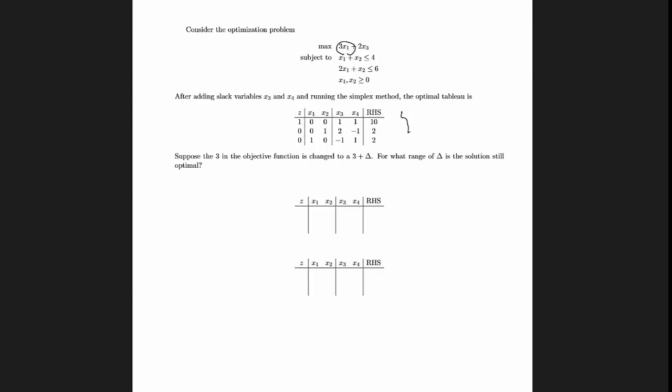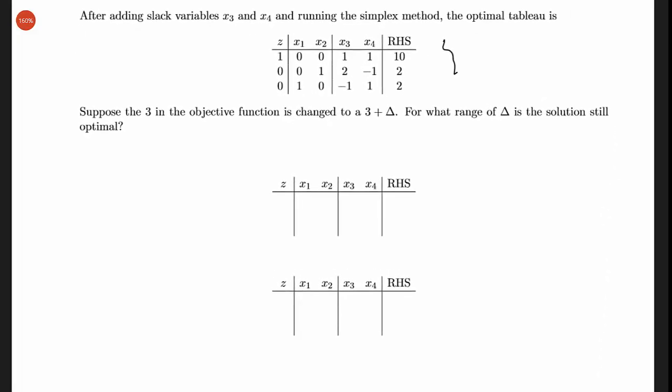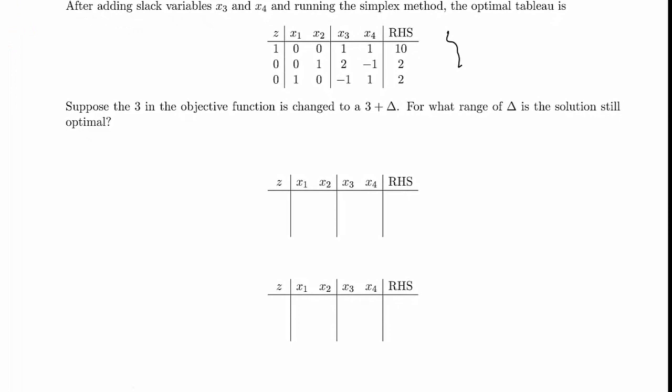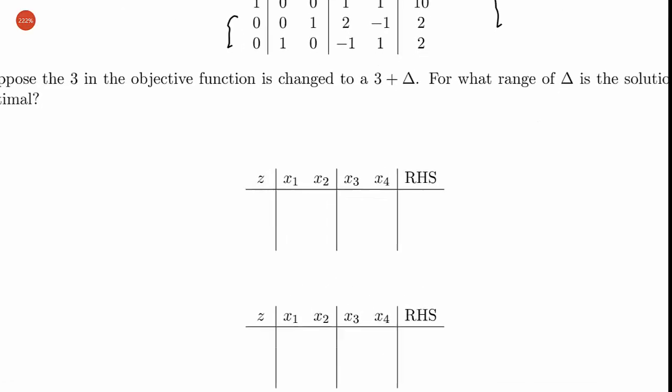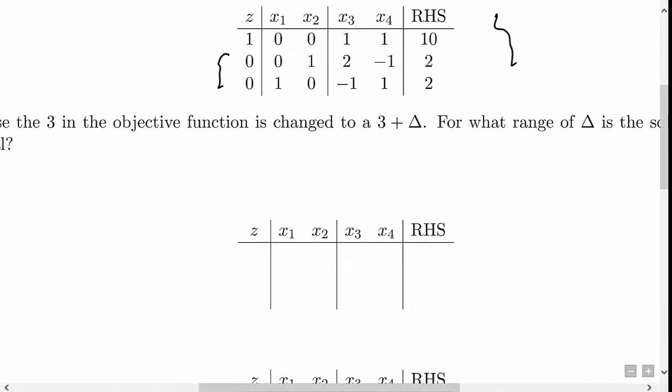So we can fill out our table for the new problem as if we had run the same row operations that we did in the original problem. And by the fundamental insight, we know that rows 1 and 2 of the table are not going to change at all. So if we try to fill out this new table here, I can just copy rows 1 and 2 from the old table. Let me copy these here.